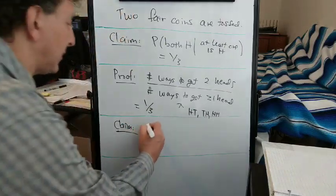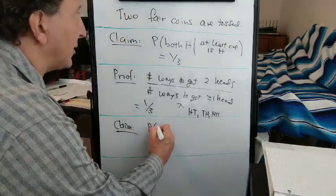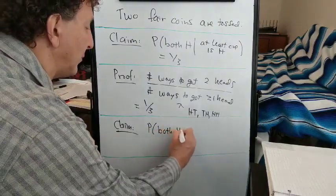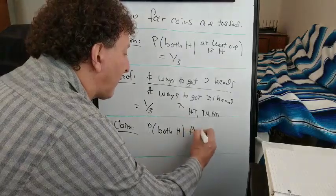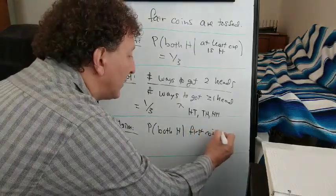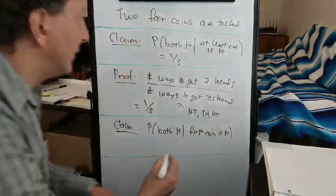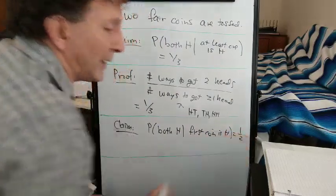And I claim that the probability that both are heads, given that the first coin is heads, is one-half.